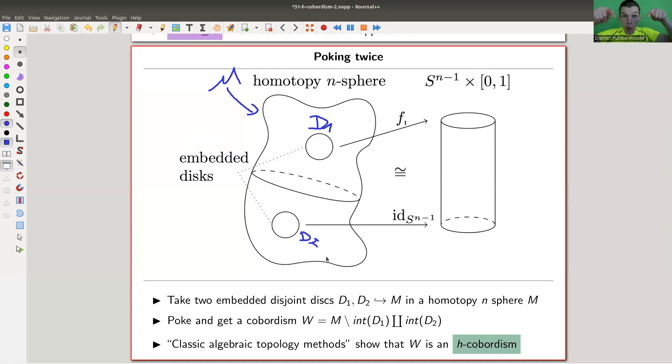And now I just poke a hole. So make this hollow here. And then I call this remaining thing W, which is now a cobordism between D1 and D2. And it turns out that algebraic topology methods, so here I'm cheating a little bit, I'm kind of cutting out that step, that's part of the proof, but algebraic topology methods show that W is actually an H-cobordism.